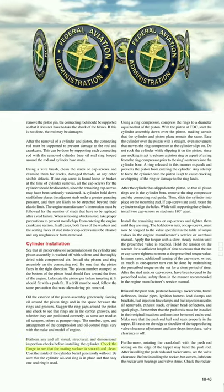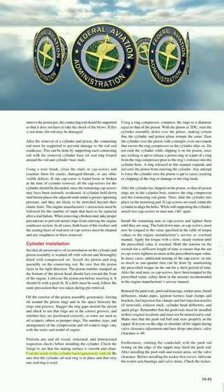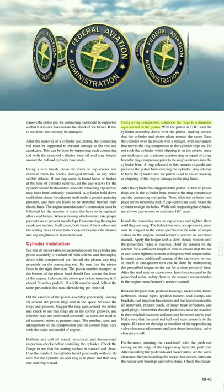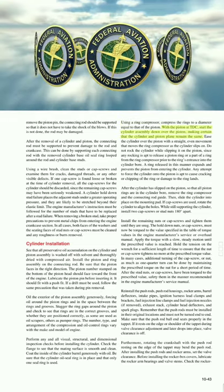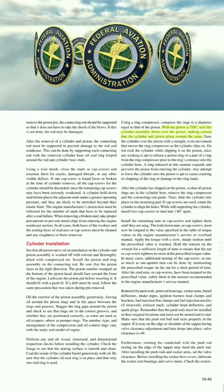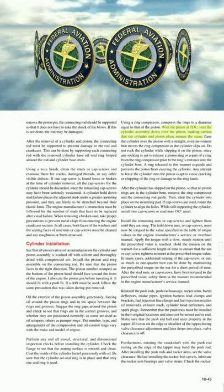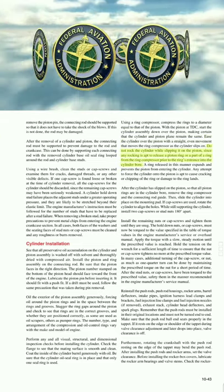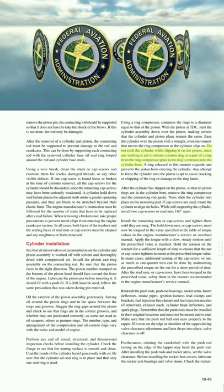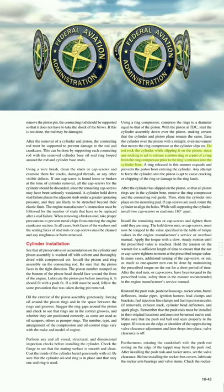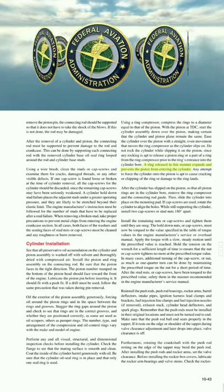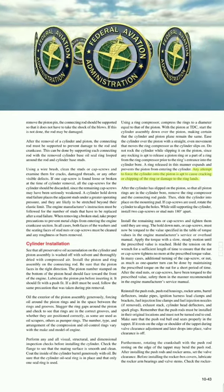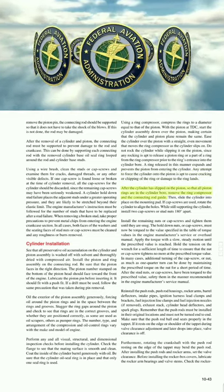Oil the exterior of the piston assembly generously, forcing oil around the piston rings and in the space between the rings and grooves. Stagger the ring gaps around the piston, check that rings are in the correct grooves, and verify their positioning — some are oil scrapers, others pumper rings. The number, type, and arrangement of compression and oil control rings vary with the make and model of engine. Check the cylinder flange to ensure the mating surface is smooth and clean. Coat the inside of the cylinder barrel generously with oil, ensure the cylinder oil seal ring is in place, and use a ring compressor to compress the rings to the piston diameter.